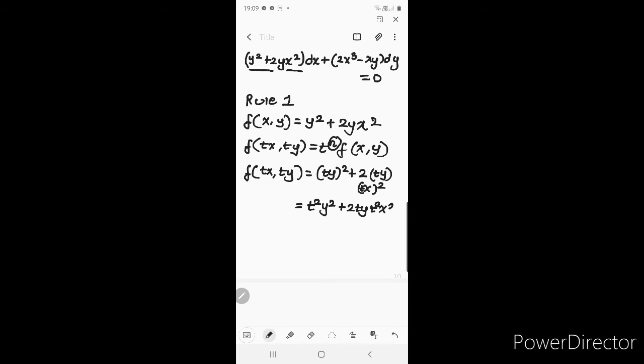What is common is t. So if I take t common out I will get y² + 2ty·x².